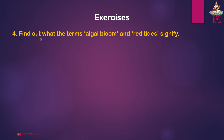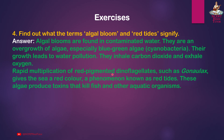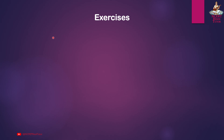Question 4: Find out what the terms algal bloom and red tides signify. Answer: Algal blooms are found in contaminated water. They are an overgrowth of algae, especially blue-green algae (cyanobacteria). Their growth leads to water pollution; they absorb carbon dioxide and release oxygen. Rapid multiplication of red-pigmented dinoflagellates such as Gonyaulax gives the sea a red color — a phenomenon known as red tides.